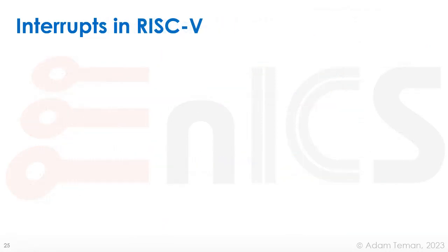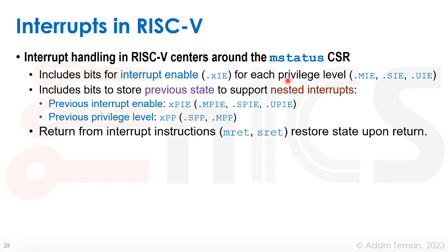Handling interrupts in RISC-V is quite complex — you really need to consult the spec to implement it. It centers around a CSR called mstatus, which has 32 or 64 bits divided into sub-registers. The .xIE bits are interrupt-enable bits, where x is m, s, or u: .mIE for machine interrupt enable, .sIE for supervisor interrupt enable, and .uIE for user interrupt enable. Each allows or disables interrupts for the corresponding privilege mode.